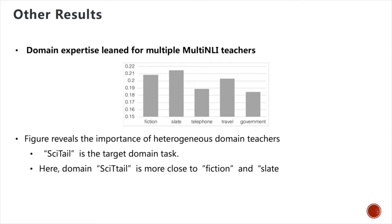Furthermore, we average the domain expertise score for all the data instances and visualize the importance of different domains in this figure. We find that the results are insightful — it reveals the importance of heterogeneous teachers from different source domains to the target tasks. Specifically, we find that the domain Cytale is close to fiction and slate, but not close to telephone and government in multi-NRI. This is intuitive, as the Cytale data is created for multi-choice science examinations and web sentences, so it will be more closely related to fiction and slate.